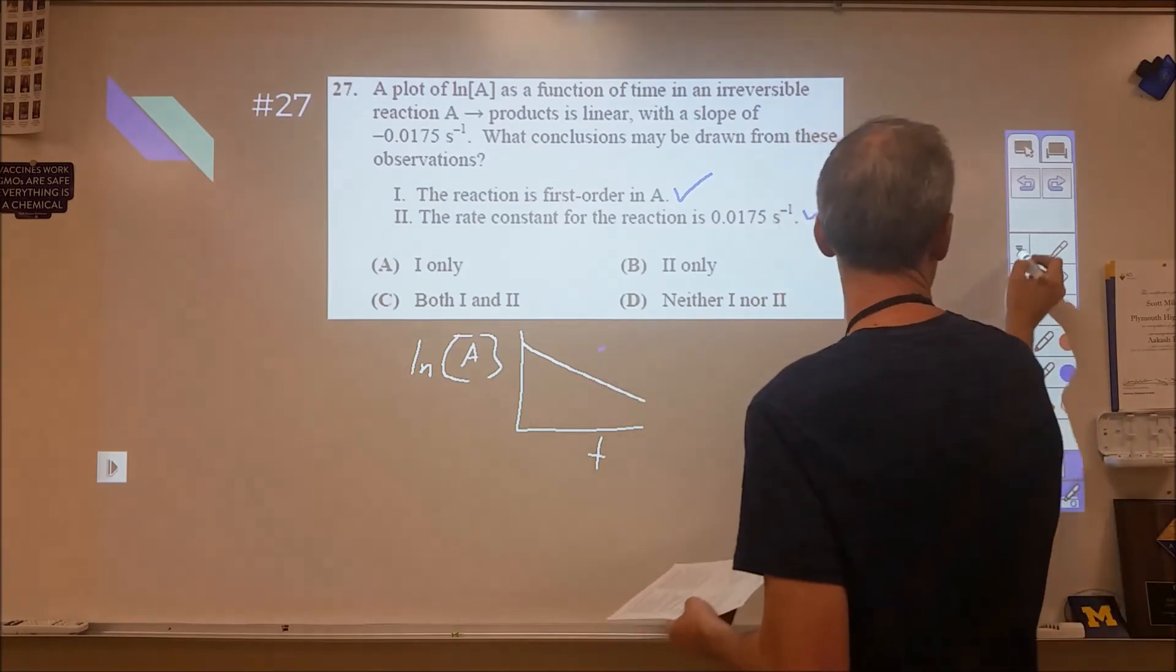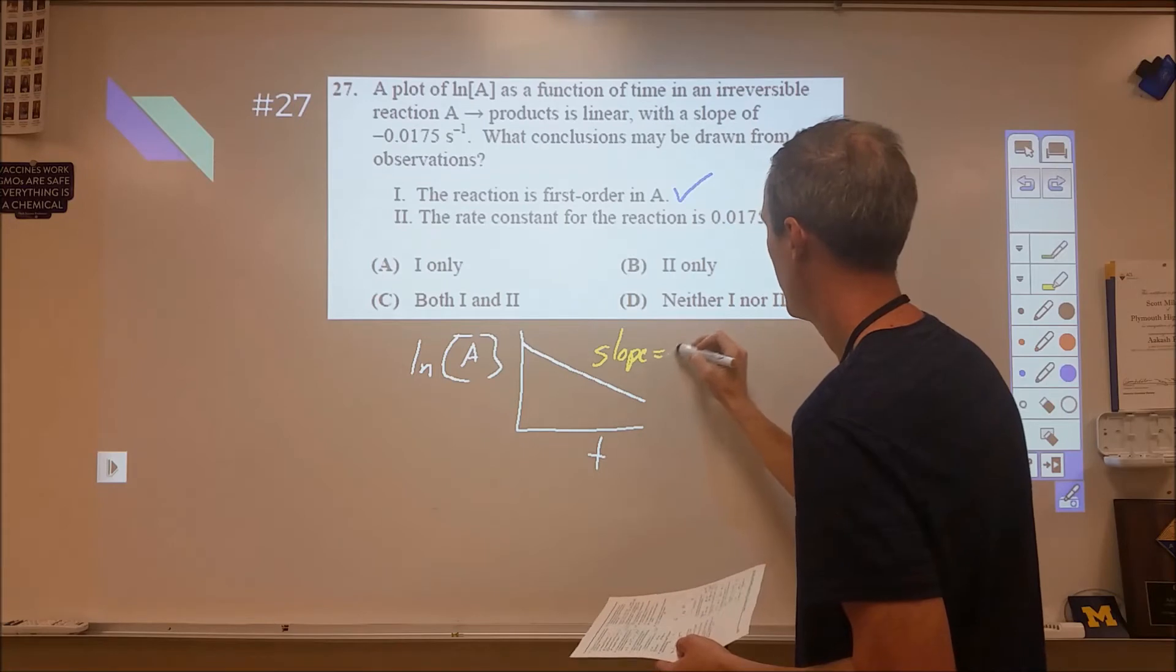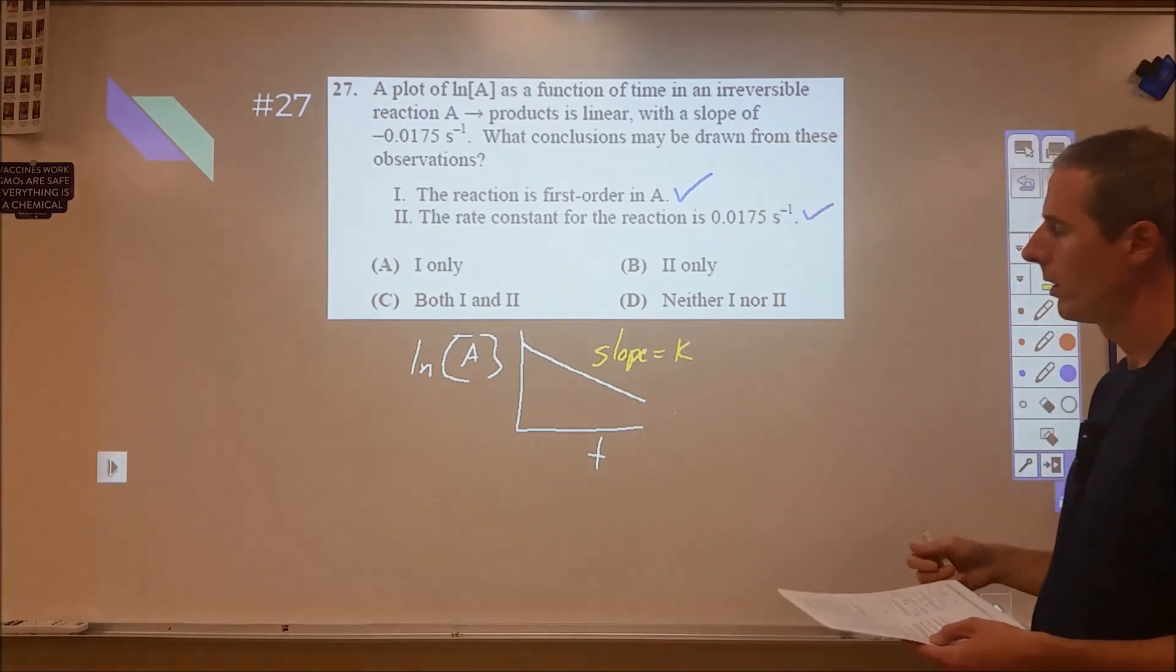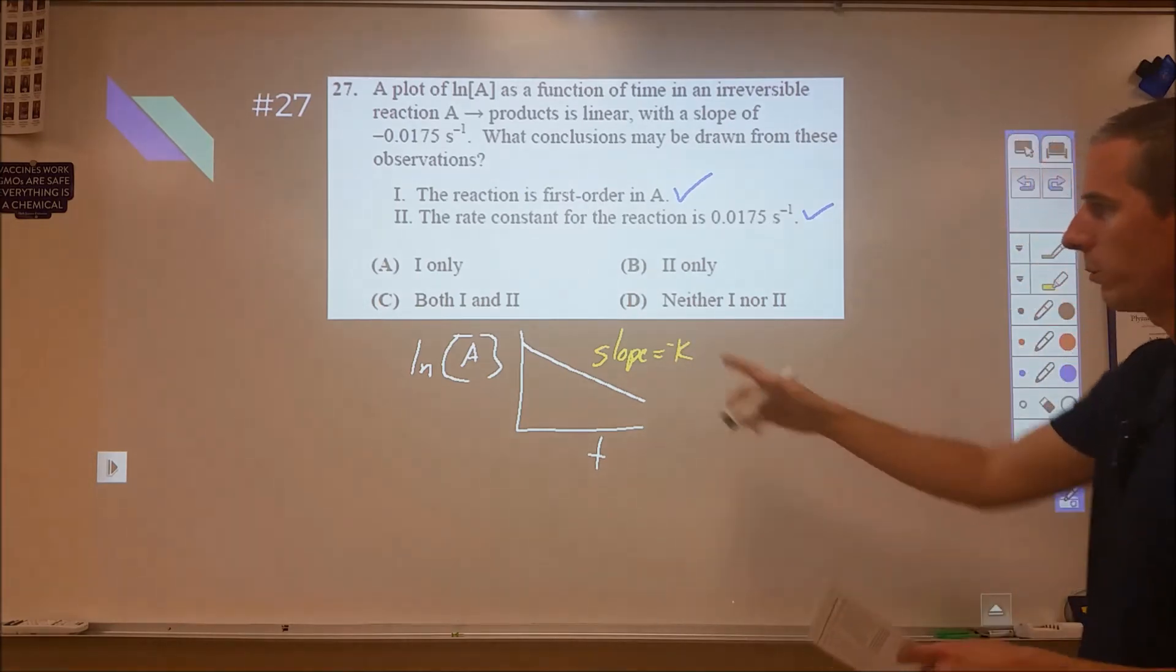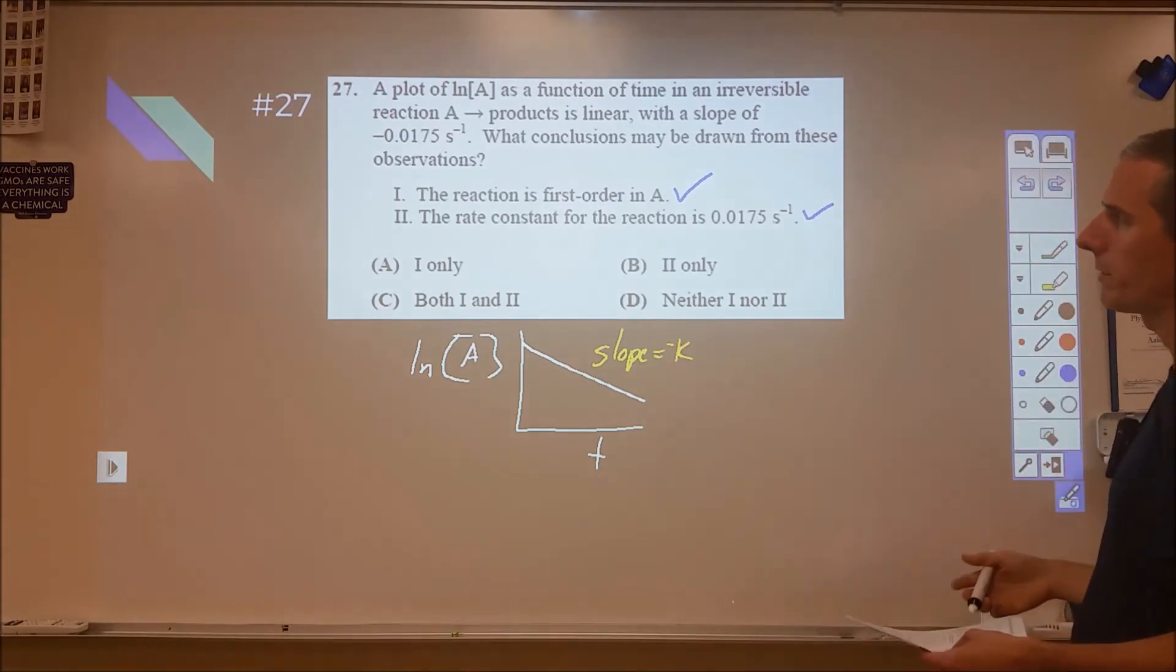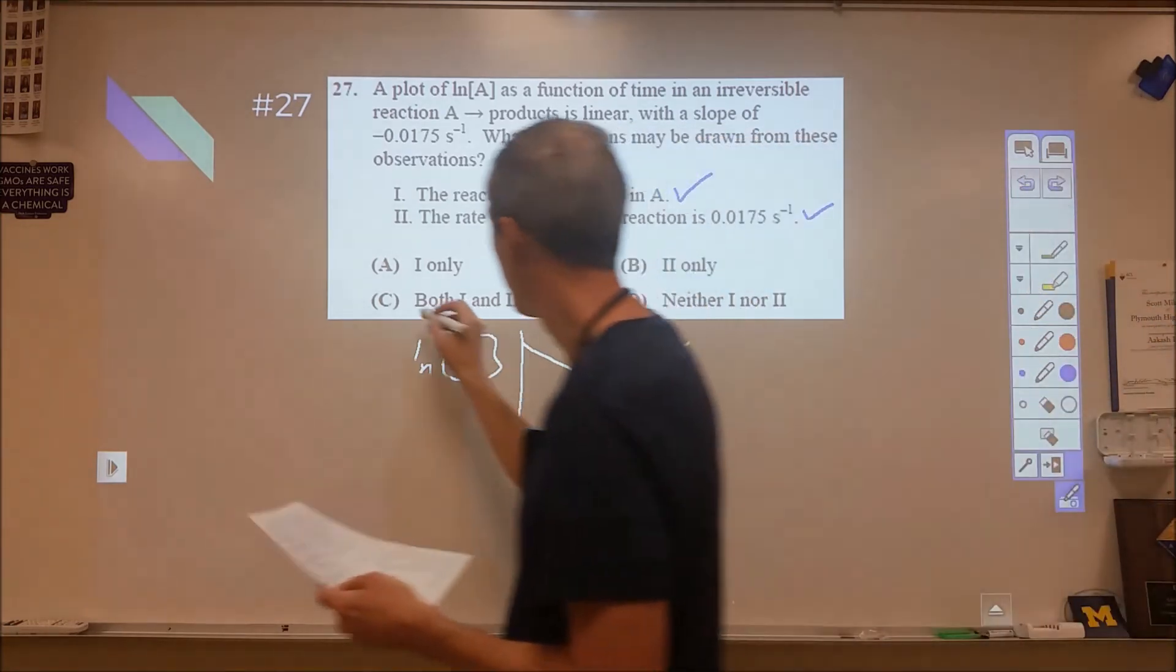The slope of these will always be negative K for first order or for zero order, and then the slope for second order, whatever concentration versus time will give me a positive K. So 27, both are correct. And that would be C.